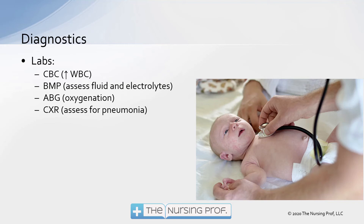An ABG would typically be done if we're seeing symptoms suggesting the patient isn't oxygenating well — a low pulse oximetry reading or signs like cyanosis — to determine how bad the problem is. A chest x-ray can also help rule out pneumonia.